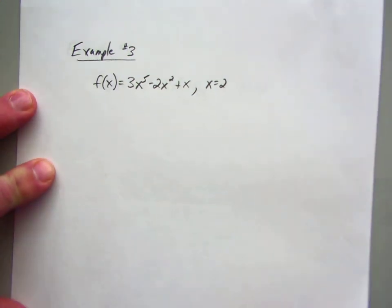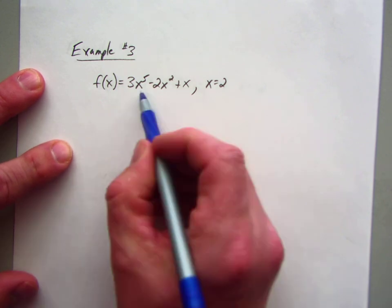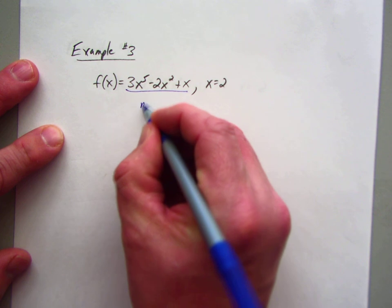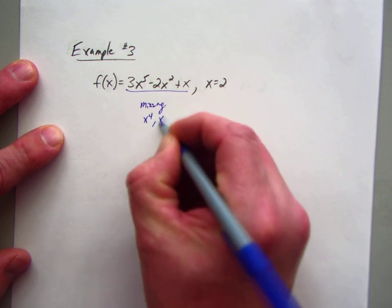Example number 3. So again, it's in standard form, we're good. So it goes x to the 5th. So we are missing x to the 4th, x cubed.